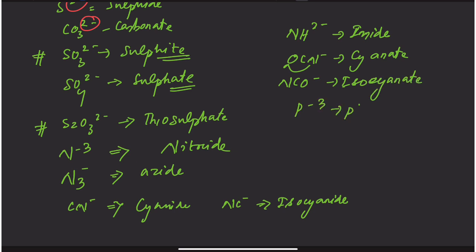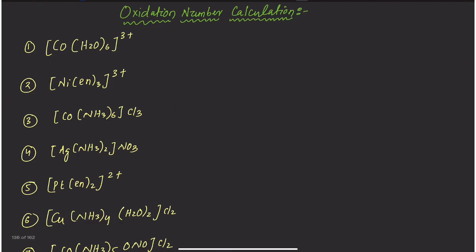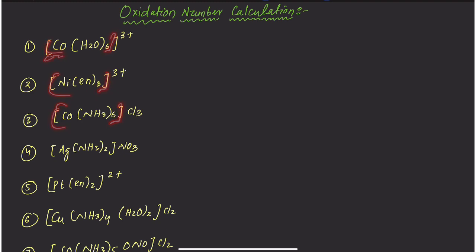P³⁻ is phosphide, and PO₄³⁻ is phosphate. Looking at a complex compound written in square brackets, you can see examples with central atoms Cobalt, Nickel, Mercury, Copper, and Platinum. We need to determine the oxidation number of the central metal atom in each case.